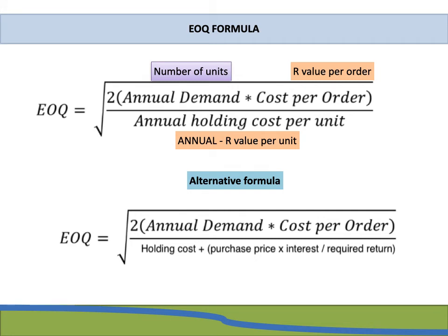There is an alternative formula which is pretty much the same, with the only difference being the denominator: holding cost plus the purchase price multiplied by interest or the required return. To know which one to use, let the information in the question guide you. If all you have is holding cost in the question, that's all you use. But if you see something about a purchase price and an interest rate or required return, then you use that as well.